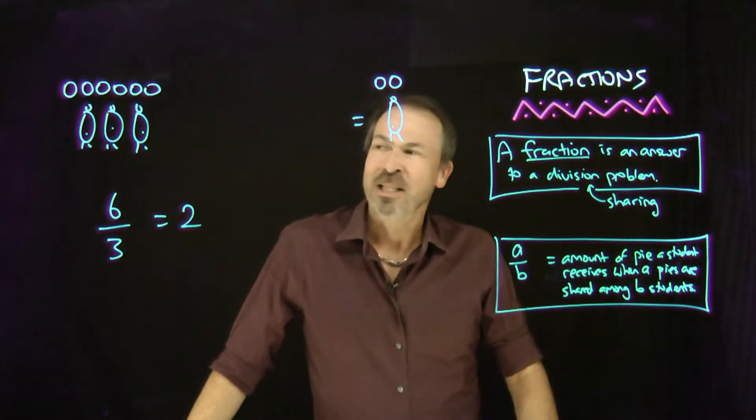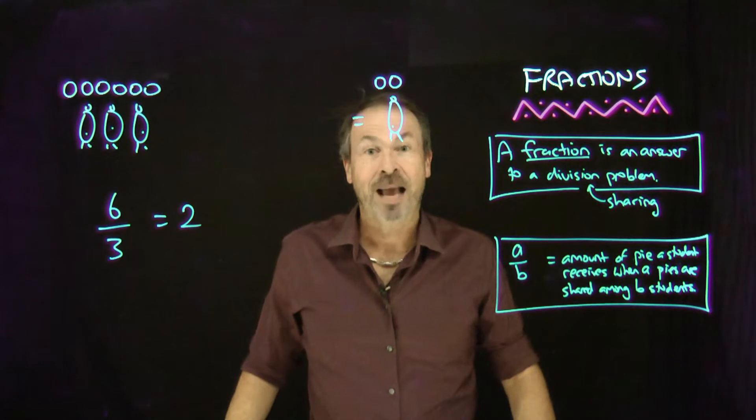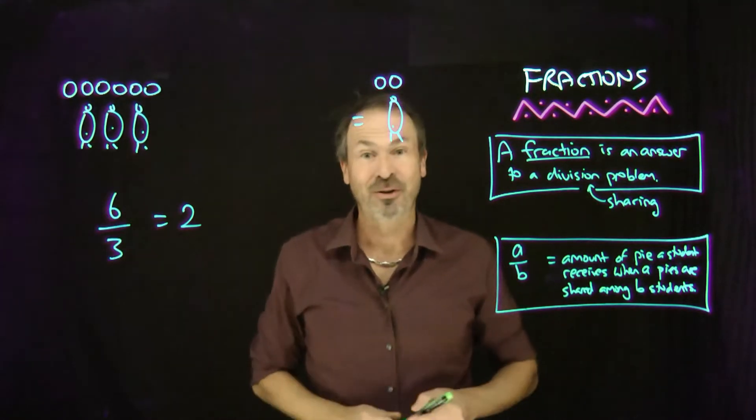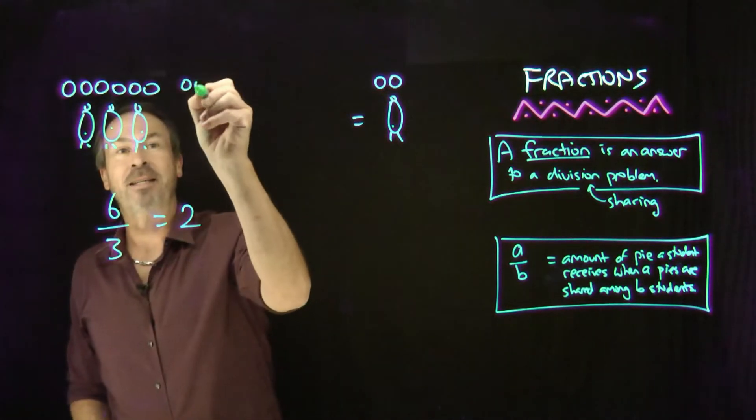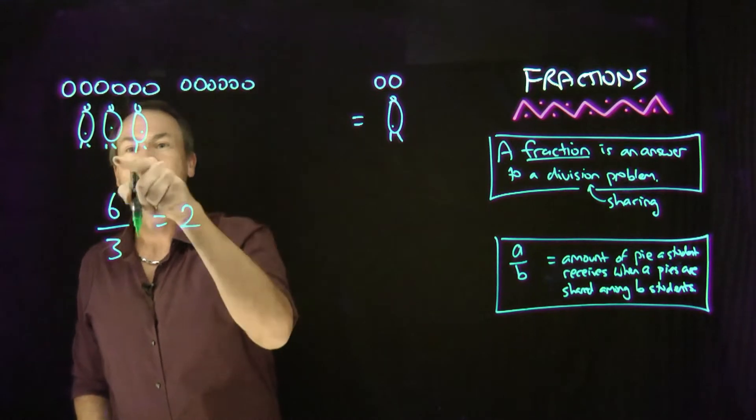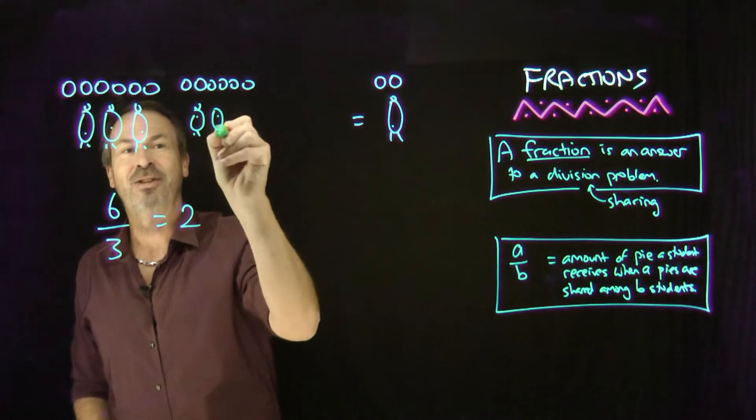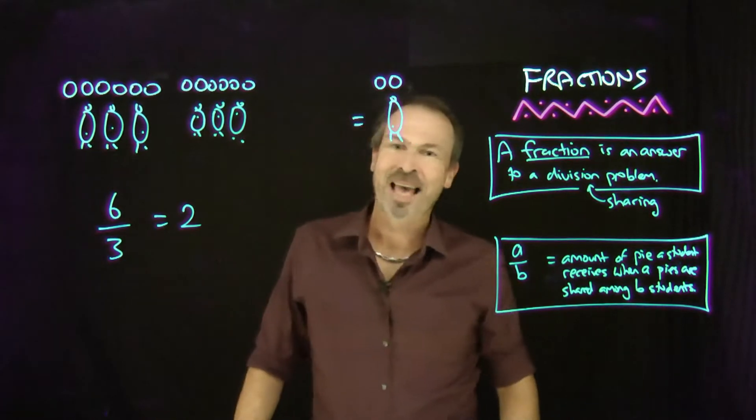Let me ask this. Suppose I were to double the number of pies and also double the number of students. So sharing six pies, I made it another six to twelve pies, and three students, another three to six students.